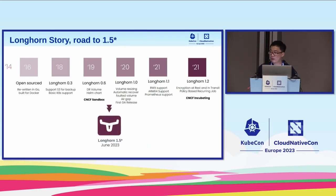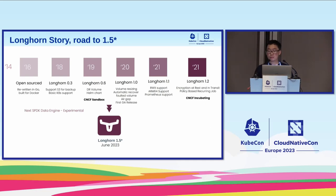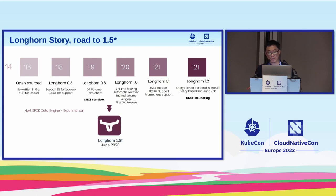The important upcoming version is 1.5, planned for June. We will introduce a new data engine based on SPDK, targeting better IO performance. The current data engine uses the iSCSI stack, and we have performance concerns. With SPDK, we want to achieve at minimum: replication, snapshot, and degraded volume handling. This will be released as experimental.